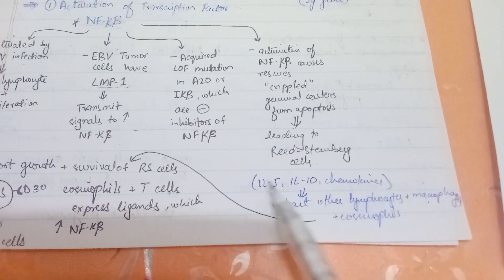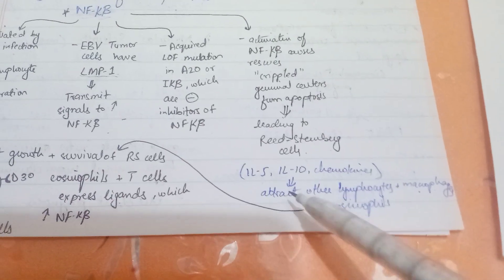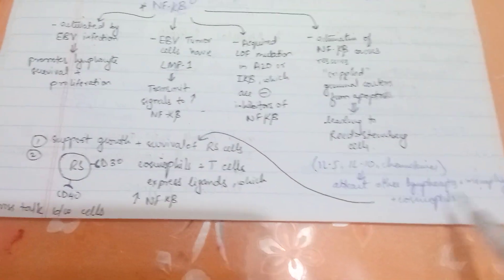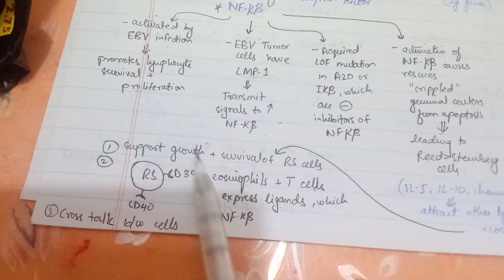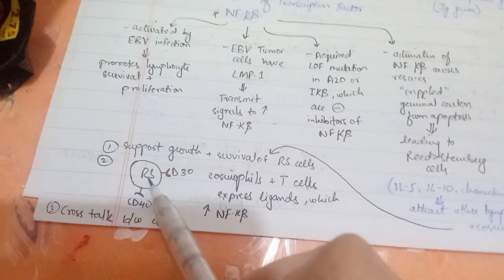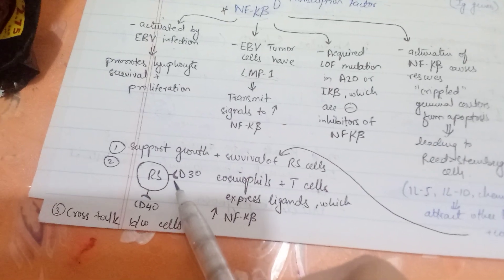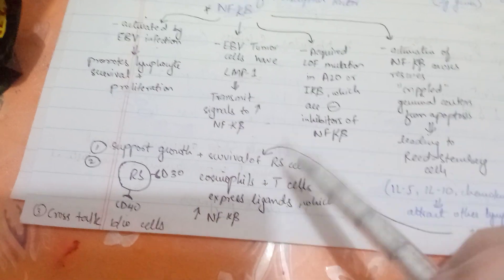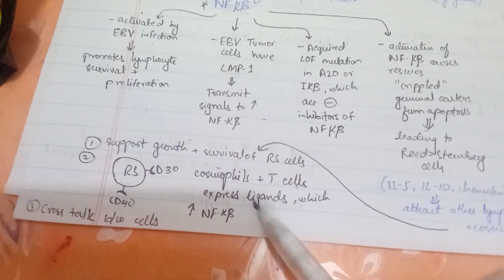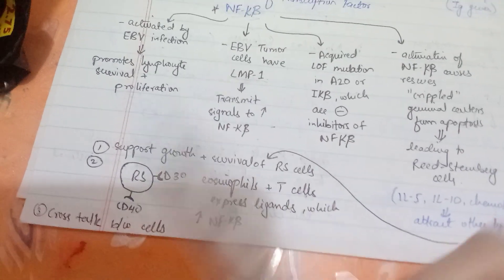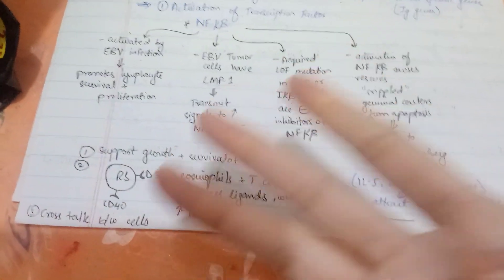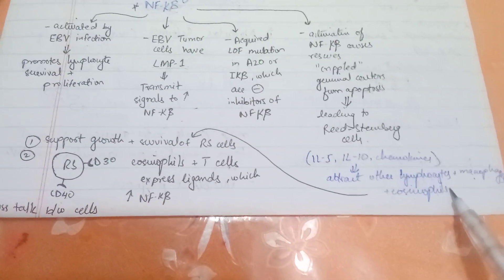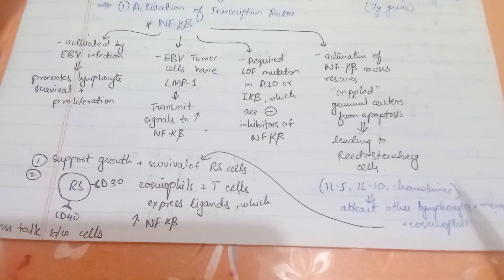Reed-Sternberg cells inside the lymph nodes release factors including interleukin-5, interleukin-10, and chemokines, attracting lymphocytes, macrophages, eosinophils, and other blood cells. These cells support the growth and survival of Reed-Sternberg cells. RS cells also have two receptors — CD30 and CD40 — and eosinophils and T cells express ligands that bind to CD30 and CD40, further increasing NF-κB. Additionally, cross-talk between cells causes immune dysfunction.